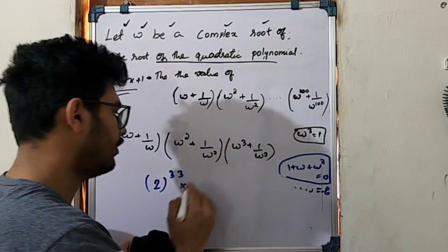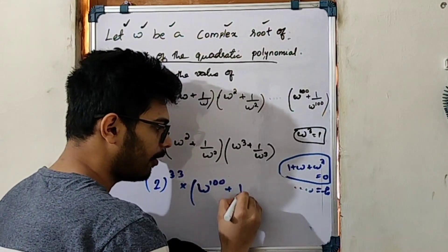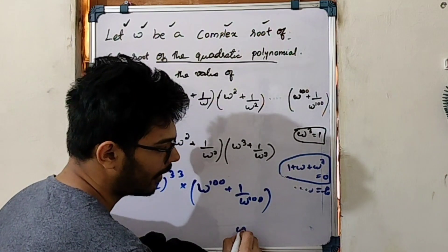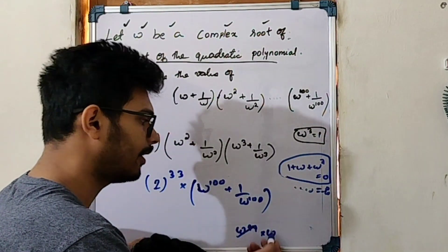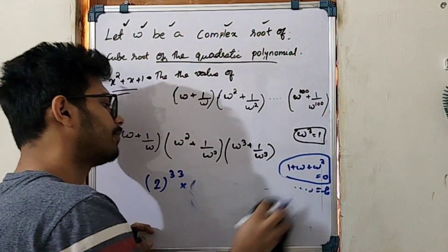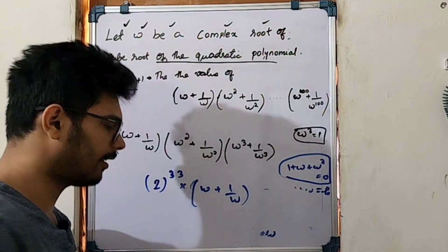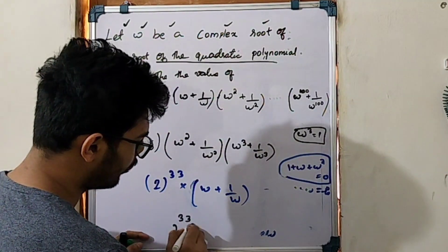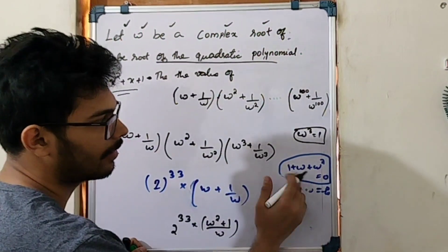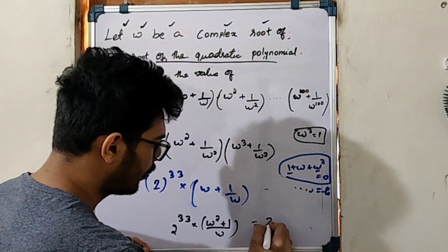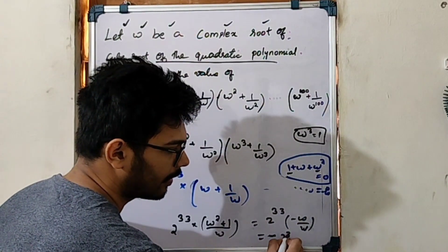Omega raise to 100 is omega raise to 100 plus 1 by omega raise to 100. Omega raise to 100 equals omega raise to 99 times omega. Since omega cubed equals 1, omega raise to 99 equals 1, so this value equals omega. Therefore 1 plus omega raise to 100 gives us minus 1 by omega, and 2 raise to 33 times omega plus 1 by omega, with 1 plus omega equal to minus omega squared, gives the final answer: minus 2 raise to 33 times omega raise to 100.